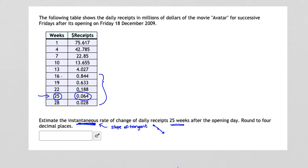We then will take the first average rate of change, and that's going to be the average rate of change between the point (25, 0.064) and the point where the number of weeks is 16 with its corresponding y value of 0.844. And if we calculate the average rate of change in daily receipts for that particular set of points, we get a slope of approximately negative 0.086 repeating.